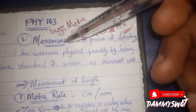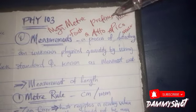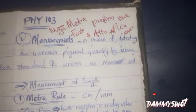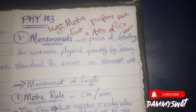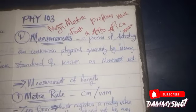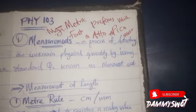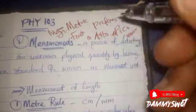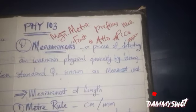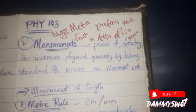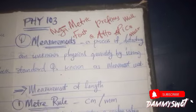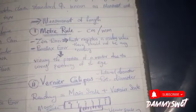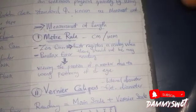We can now go into measurement, defined as the process of detecting an unknown physical quantity by using a standard quantity. A standard quantity means something that has been known — you use it to determine what is unknown. That's what you should understand as measurement.